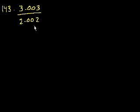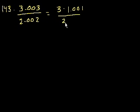I mean, it looks like 3 over 2. But just to confirm that, let's see. This is the same thing as 3 times 1.001, and this is the same thing as 2 times 1.001. So you cancel those out, and yeah, you get 3 over 2, which is the same thing as 1.5.